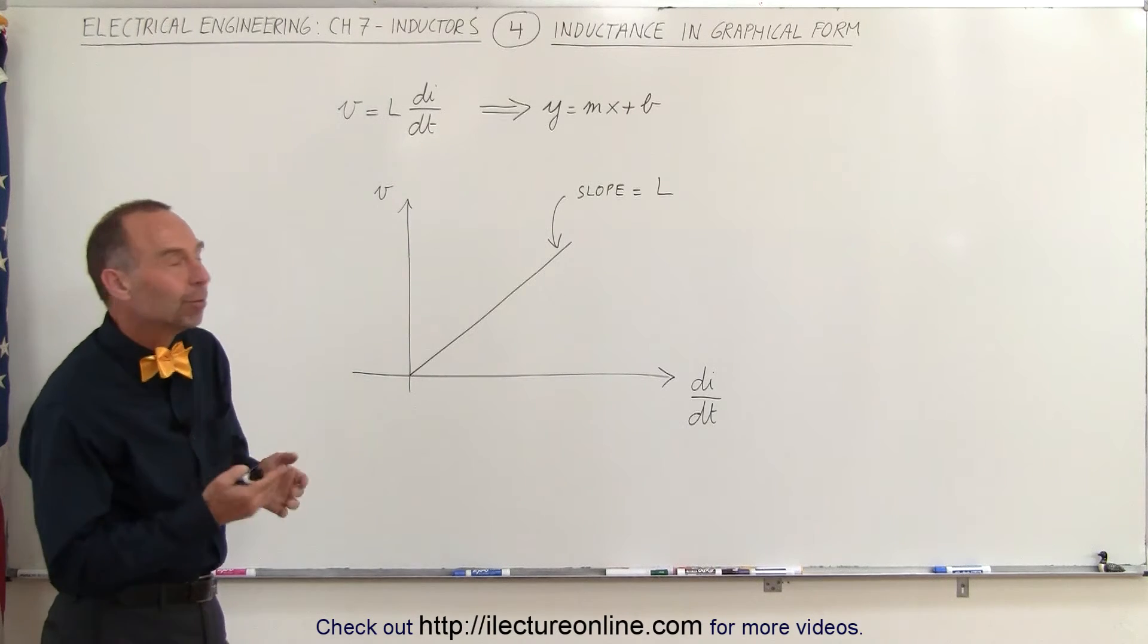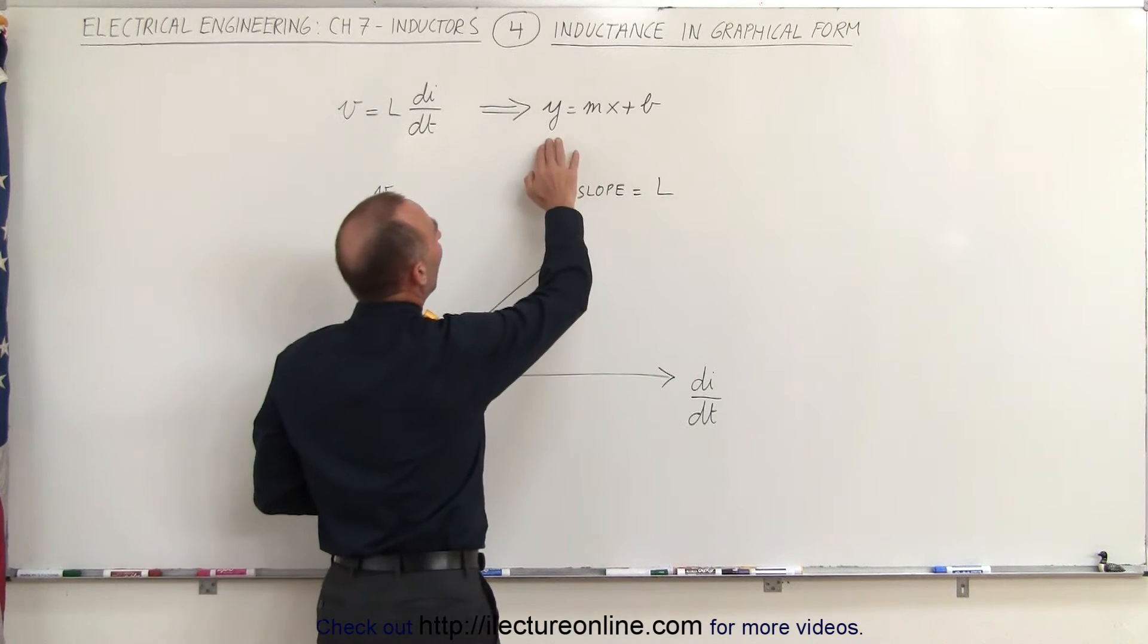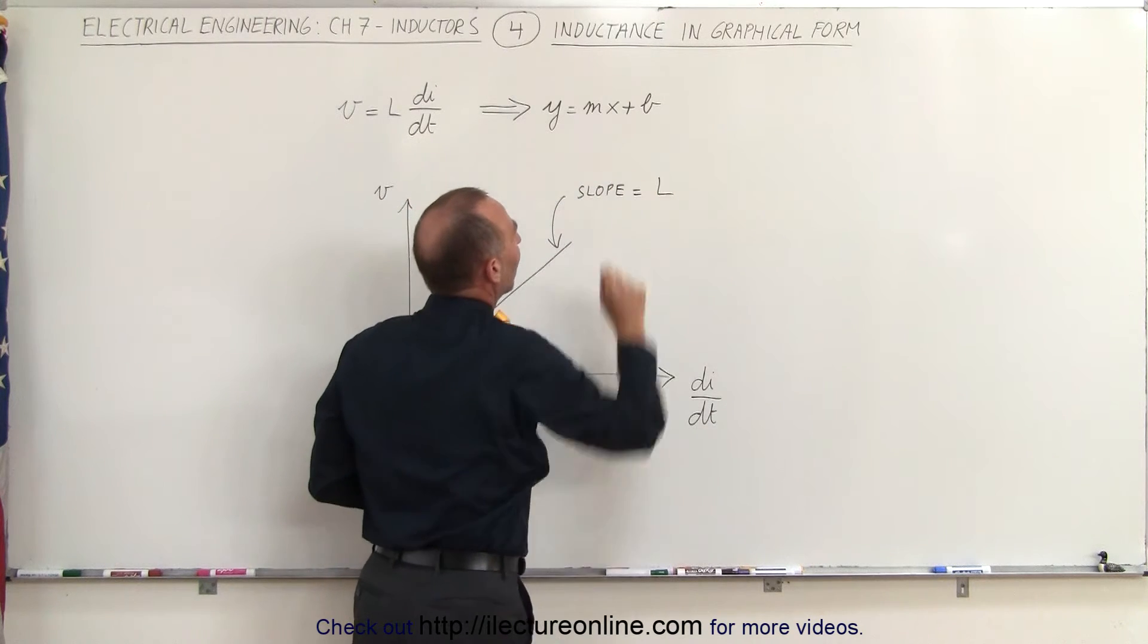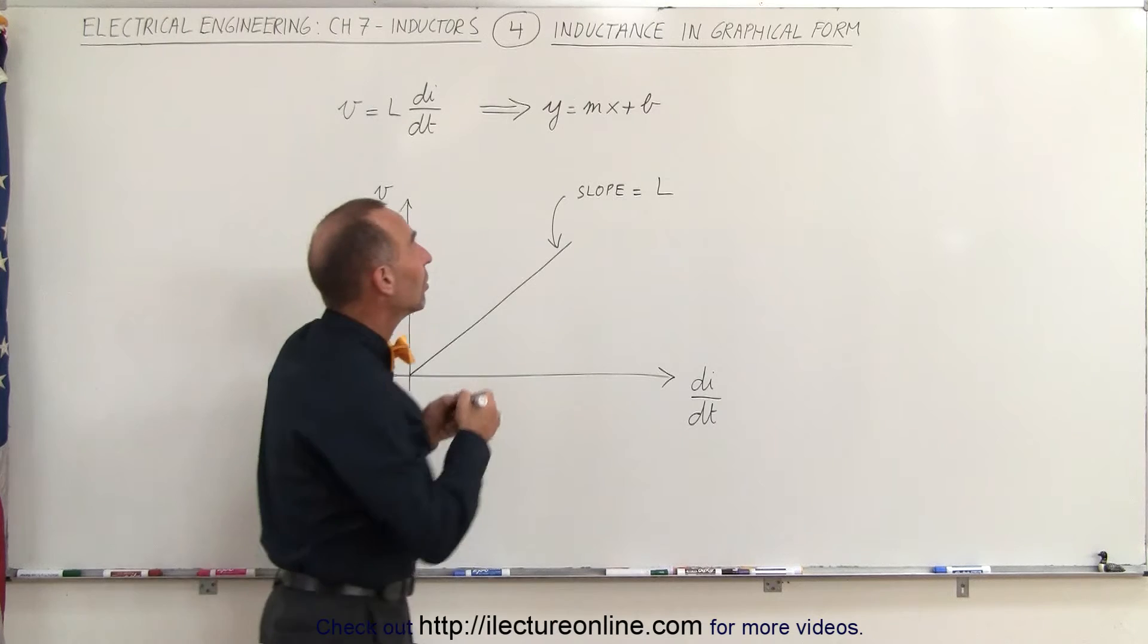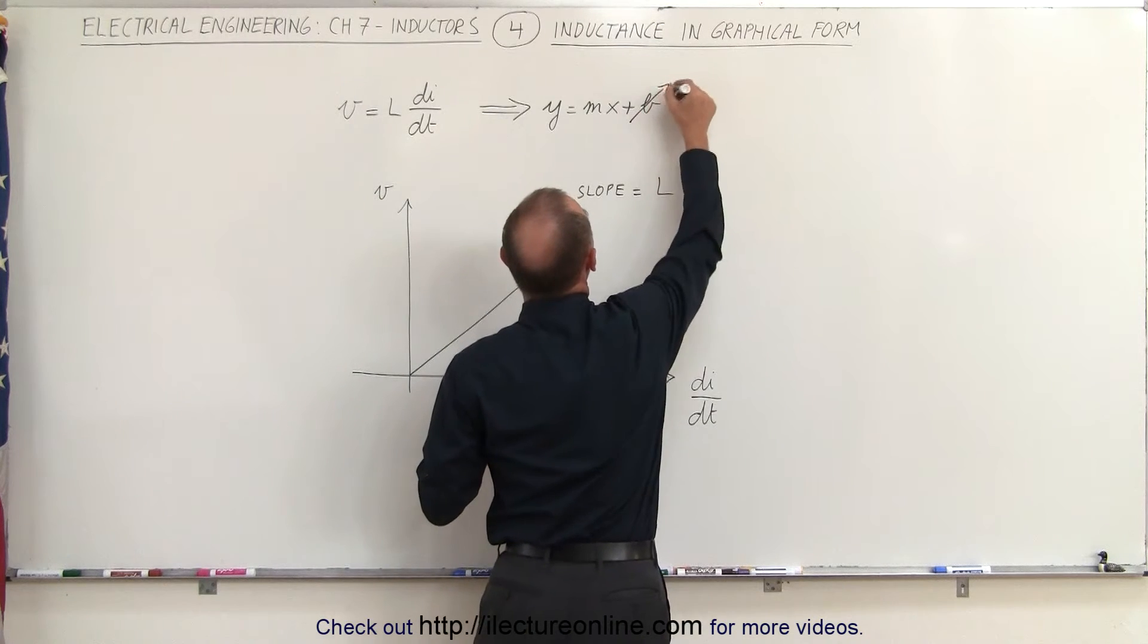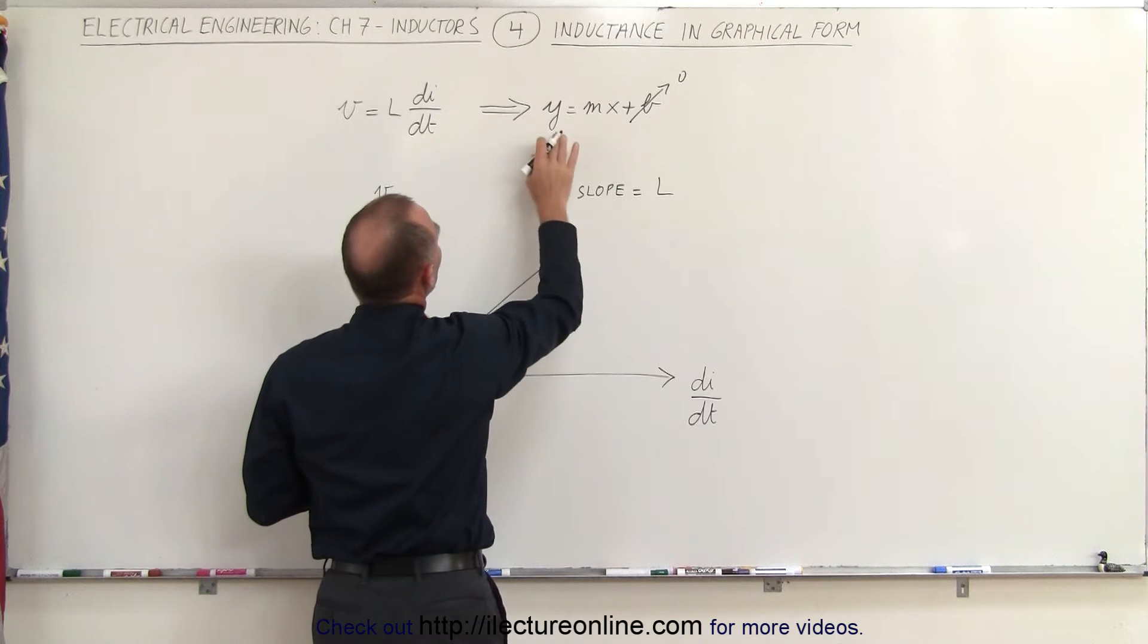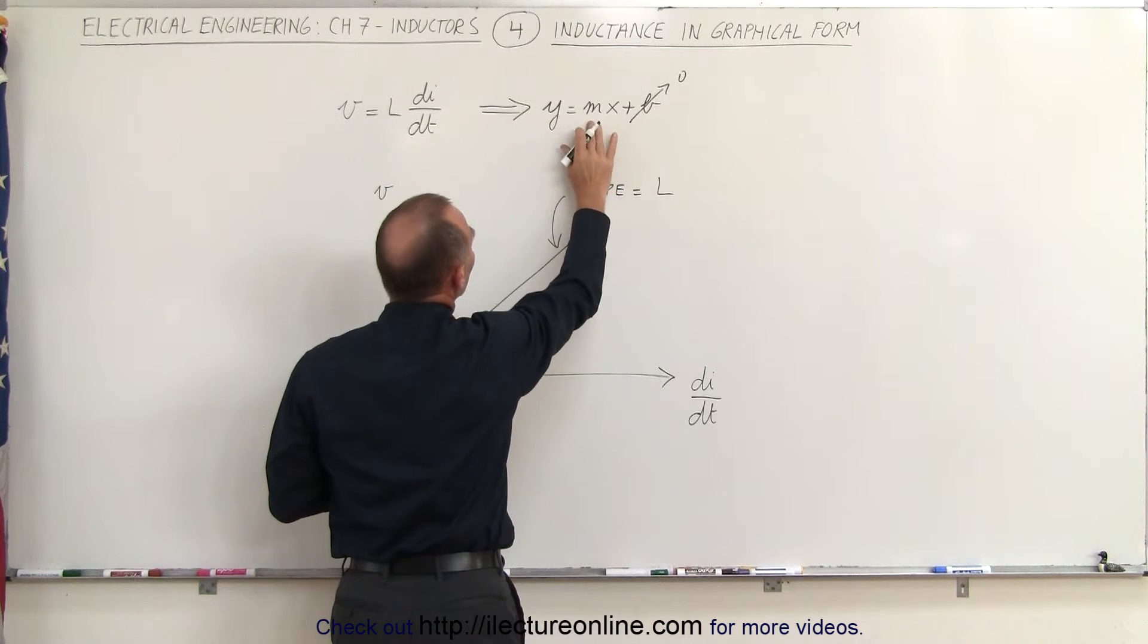But that equation has the form like the algebraic equation Y equals MX plus B, where M is the slope and B is the Y-intercept. Now, for a moment, imagine B to be zero. Now we can see that V equals L di/dt is like the equation Y equals MX, where M is the slope.